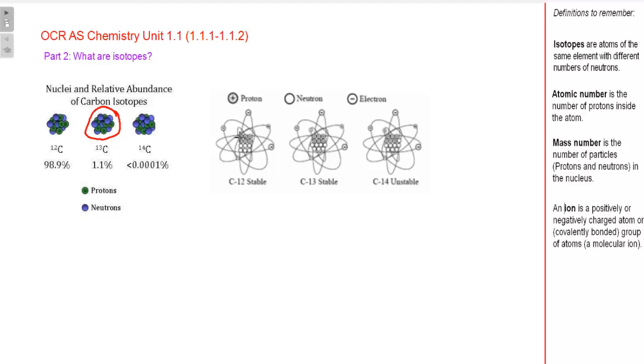So if you take carbon 12 here, it has 1, 2, 3, 4, 5, 6 protons. Now isotopes always have the same number of protons but they always have a different number of neutrons.